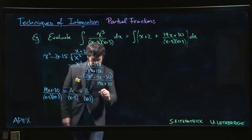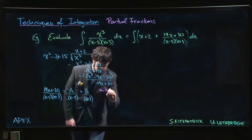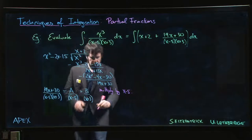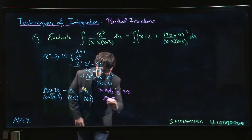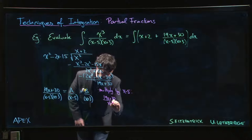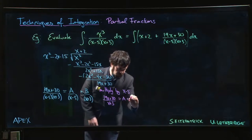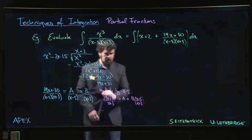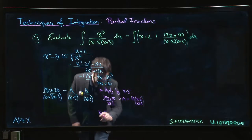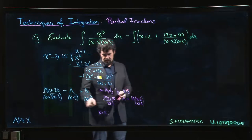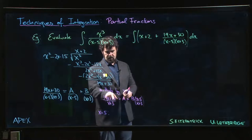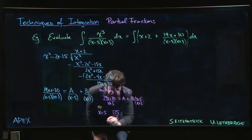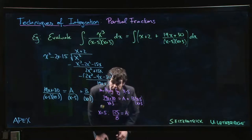If I multiply by (x minus 5) on both sides, I'm going to get 19x plus 30 over (x plus 3) equals a plus b times (x minus 5) over (x plus 3). Putting x equal to 5 is going to give me - okay, so I've got to do 5 times 19, that's 95 plus 30, which is 125. So 125 over 8 equals a. Not so bad.